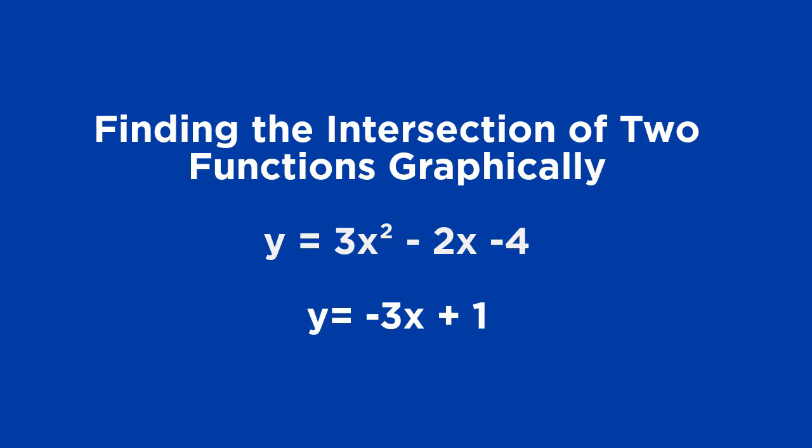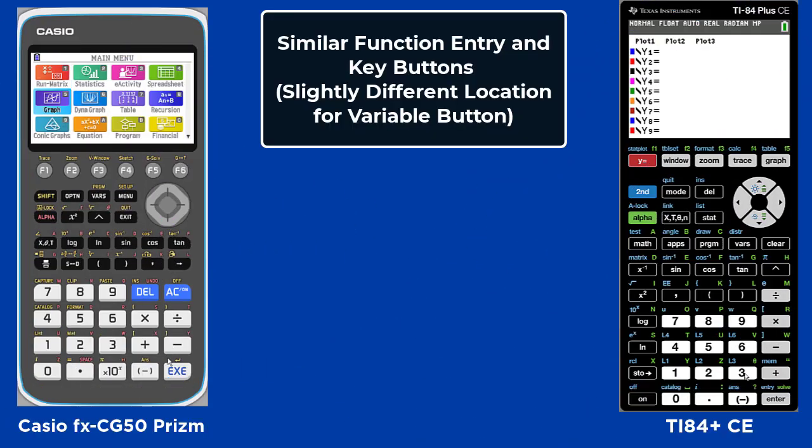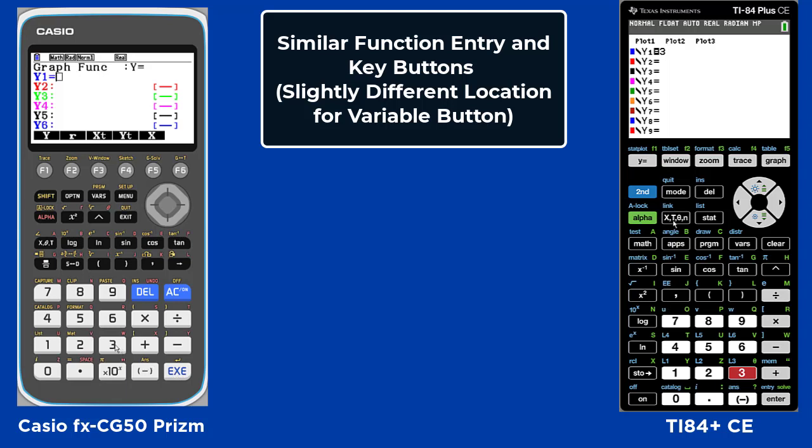In this video, we're going to show you how to find the intersection of two functions graphically. We're using the Casio FX CG50 Prism and the TI 84 Plus Color Edition.